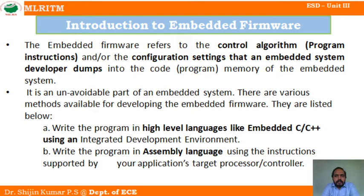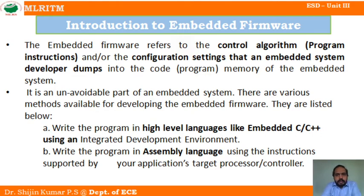The second method is assembly language programming, where we are directly giving instructions one by one. Comparing high-level language and assembly language: high-level language programming is very easy because it consists of many library files we can call and compile. Assembly language programming is difficult because the length of the program increases and each instruction has to be given per line. Assembly language is also targeted for different microprocessors or microcontrollers.